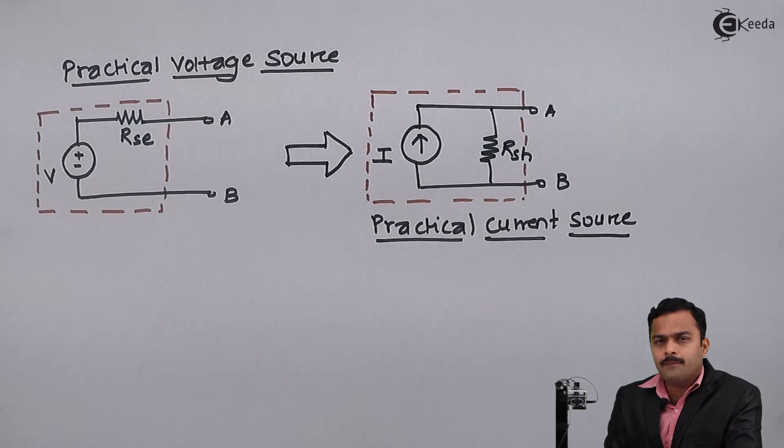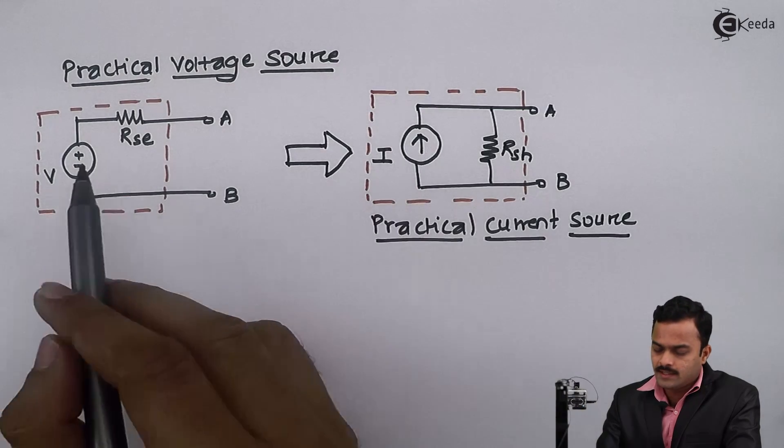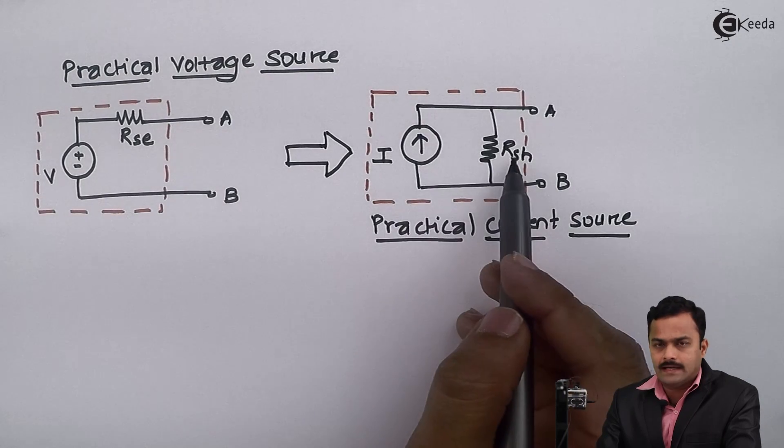Now, just drawing a practical current source does not make sense. We need to correlate values of V, RSE with I and RSH.